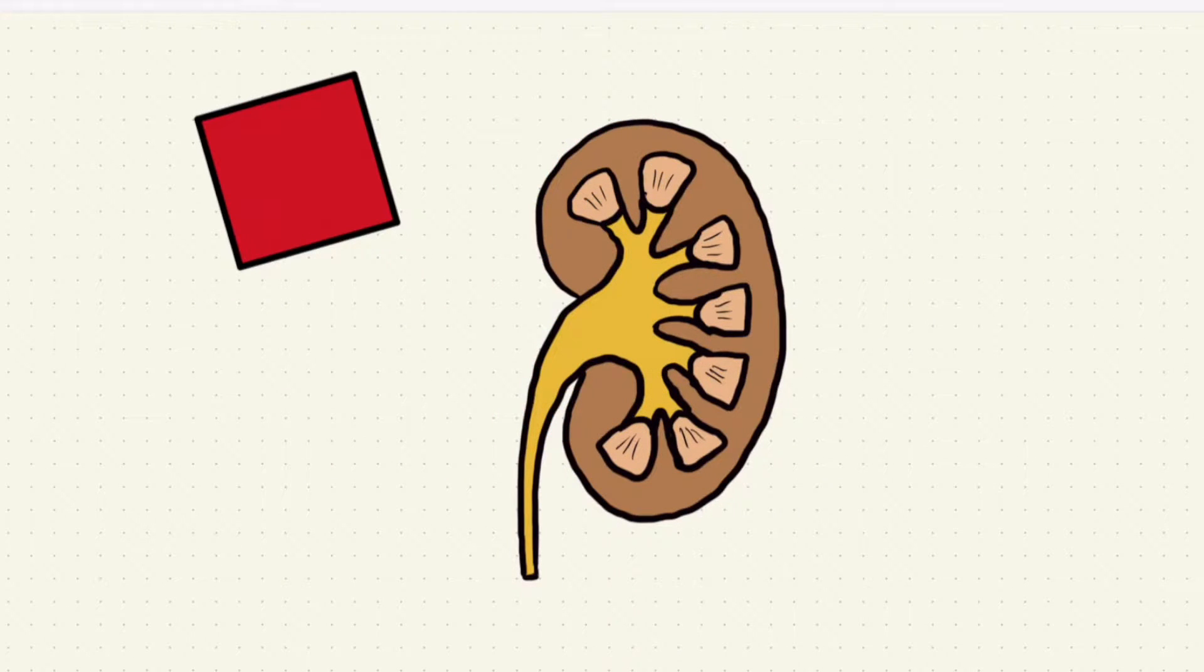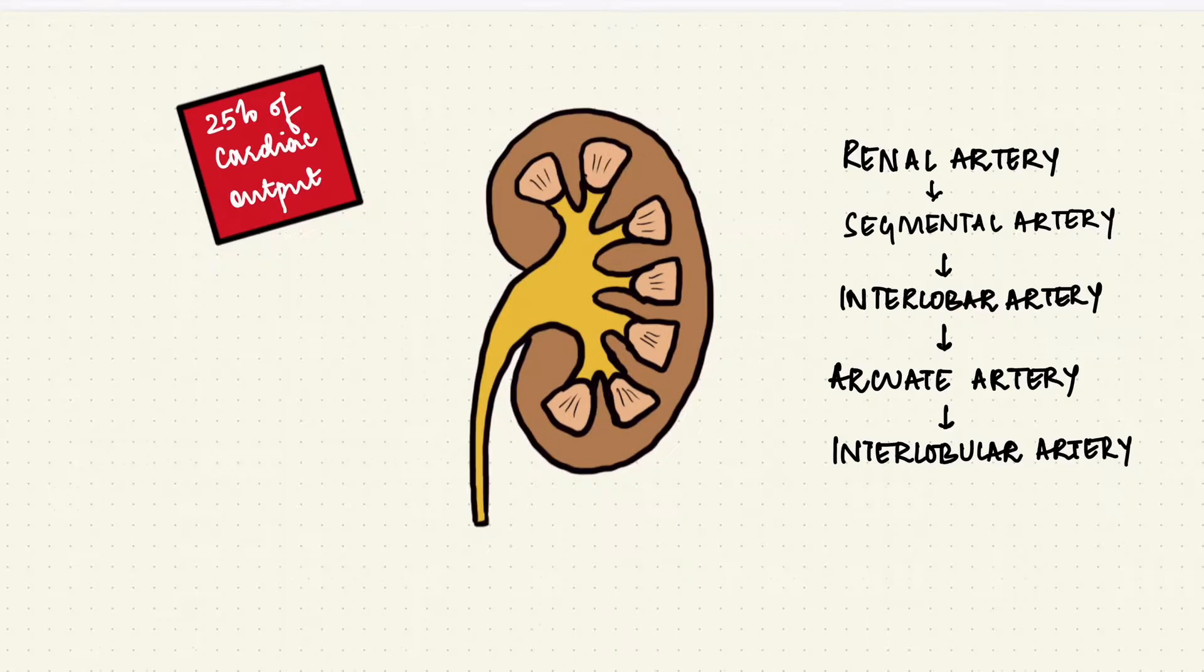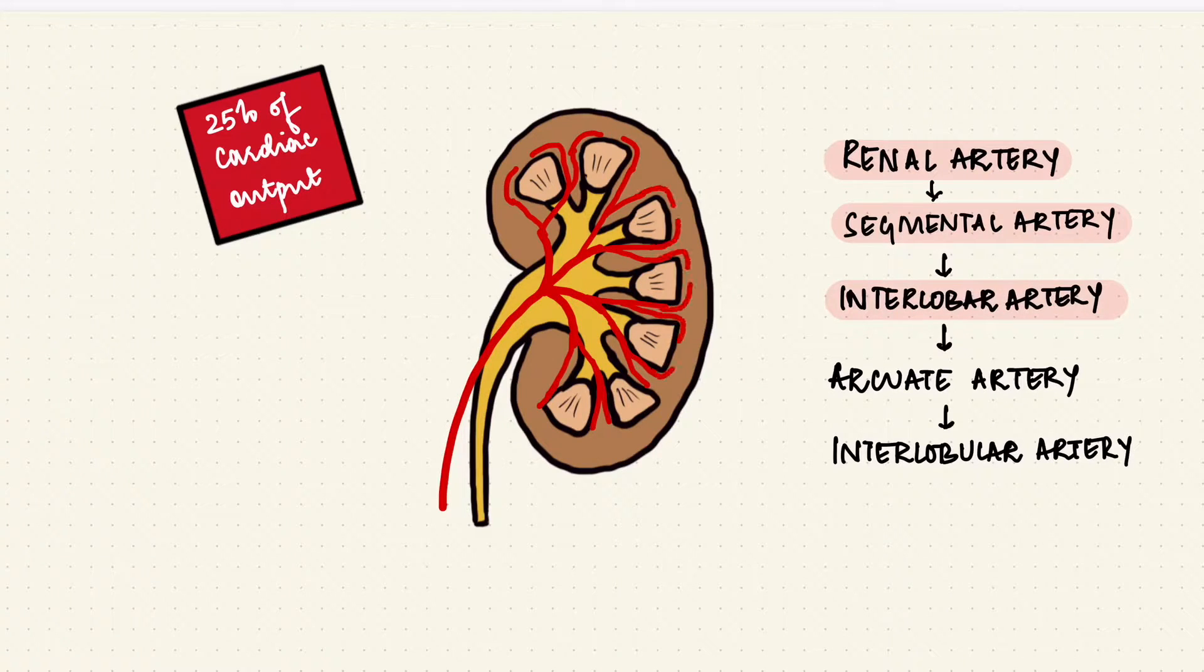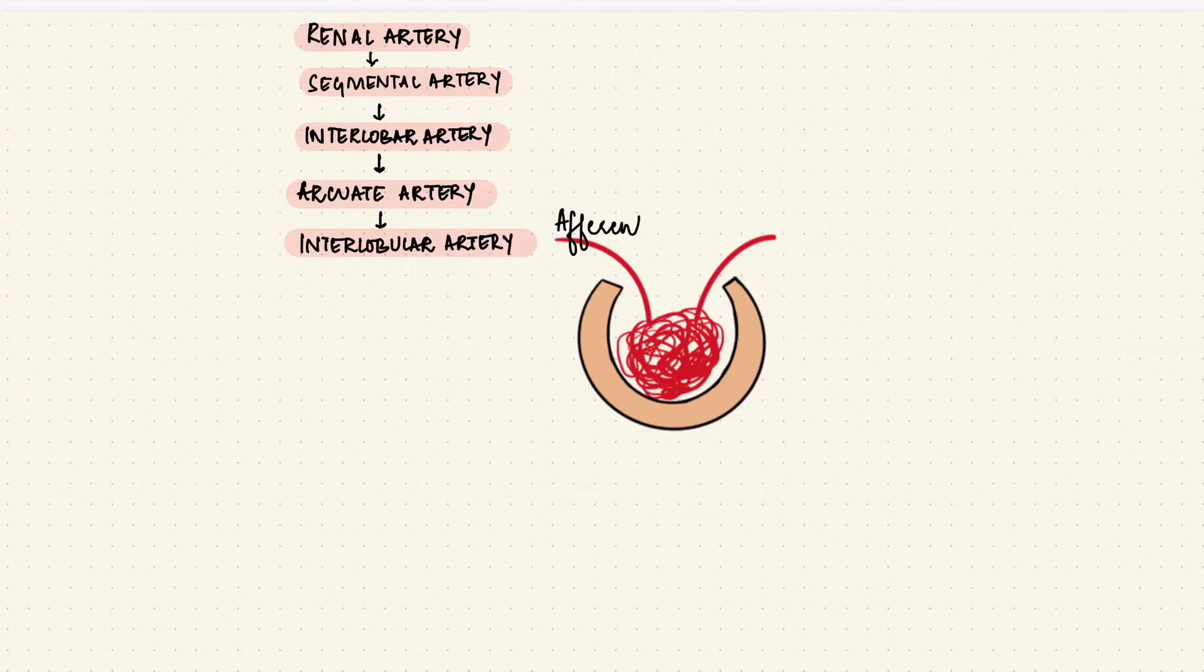The kidney gets a lot of blood. Around 25% of the cardiac output goes to the kidney through the renal arteries which enters through the hilum. They divide into segmental arteries then the interlobar artery followed by the arcuate artery, the interlobular artery and the afferent arteriole.